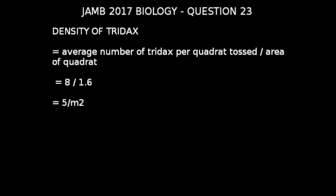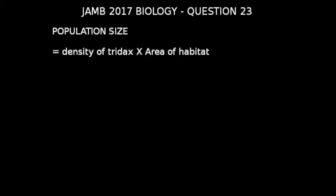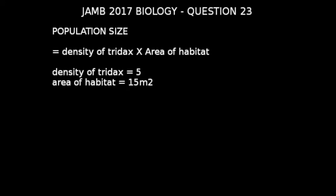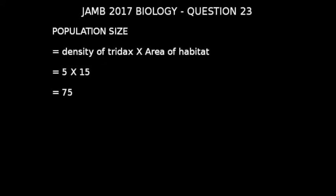Density is expressed as 5 tridas per meter square. Next, let's look at how to calculate population size. Population size = density of tridas in the area multiplied by area of the habitat. The density is 5 and the area of habitat is 15 meters square. So population size = 5 × 15 = 75.